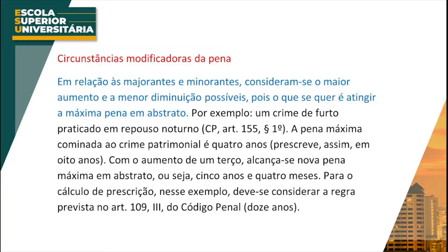Por exemplo, se há uma causa de diminuição e diz que a pena é diminuída de 1 a 2 terços, então a pena vai ser diminuída de 1 terço, para sabermos qual é a máxima pena que pode ser aplicada. Se a pena é aumentada de 1 terço até a metade, nós vamos pegar a pena máxima e aumentar a metade, para saber qual é o máximo da pena que pode ser aplicada.